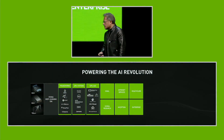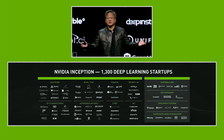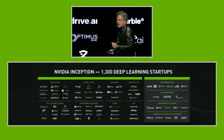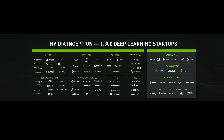We also have dedicated teams working with each of the vertical industries. One of the most important programs we have is called Inception, and many of you in the audience are part of this program. There are 1,300 startups that we're working with today focused on deep learning. You need access to early technology, resources, expertise, market exposure, and sometimes funding — and we provide all of that as part of Inception. 1,300 companies came out of nowhere — this program is literally 18 months old.